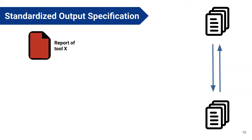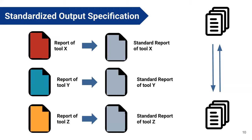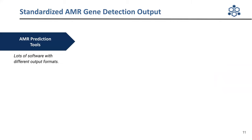The idea is that you have reports from tool X, tool Y, and tool Z, and because of this standard specification, we can map the fields of each report to our own format. We then have a comparable report from which we can extract what these tools have in common and what differs. We developed the specification by comparing many different outputs, ultimately creating a list of AMR prediction tools we wanted to work with.